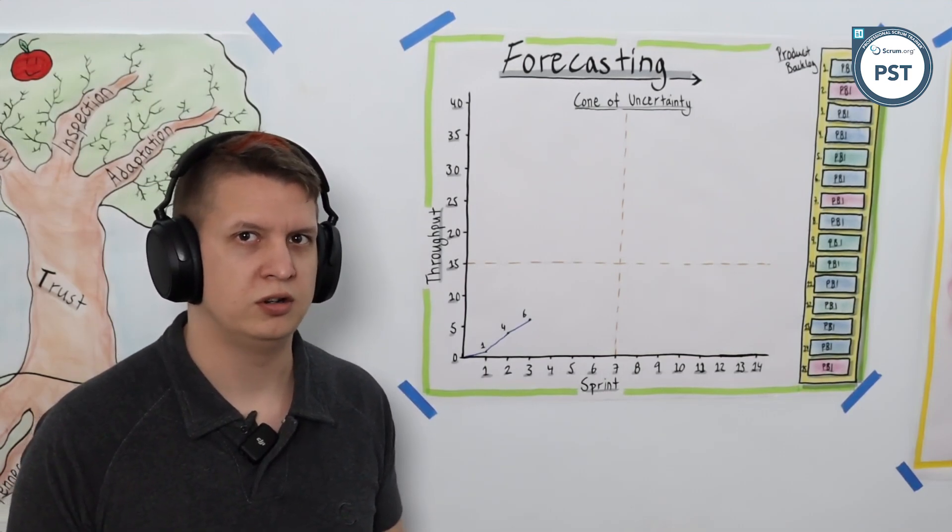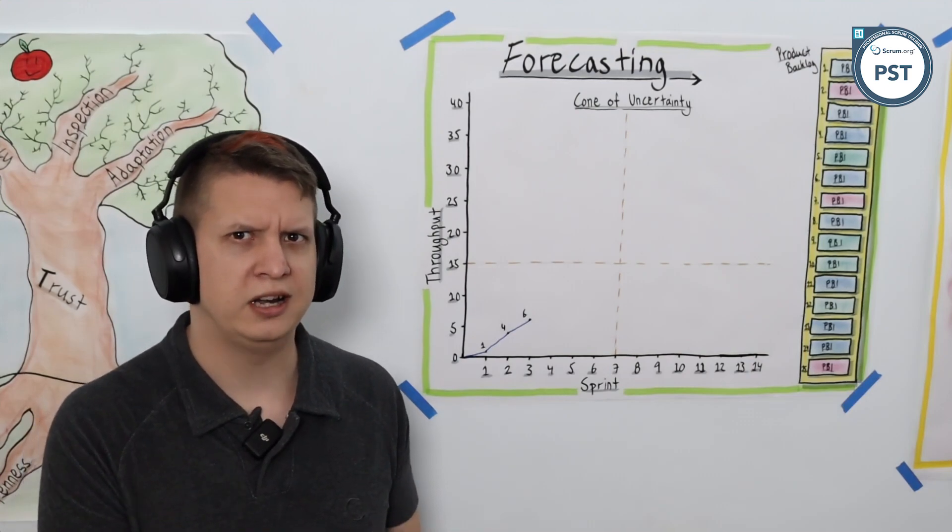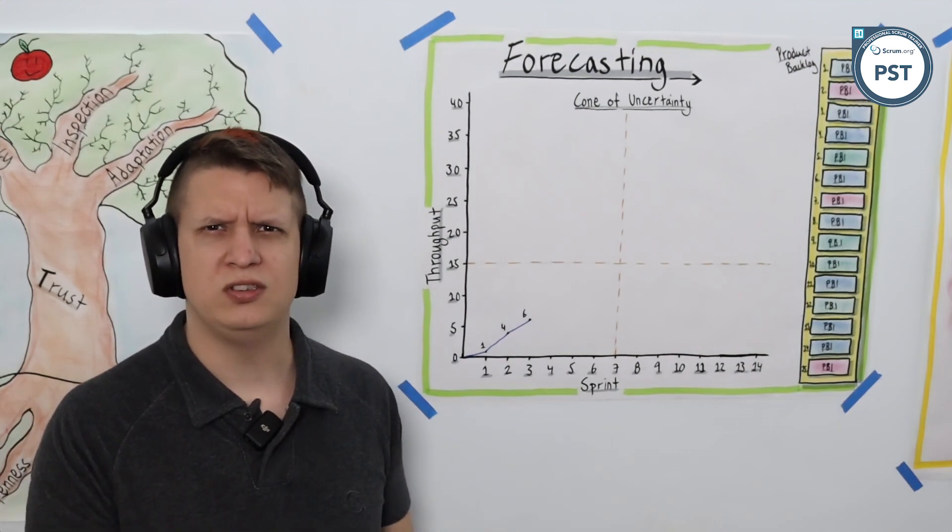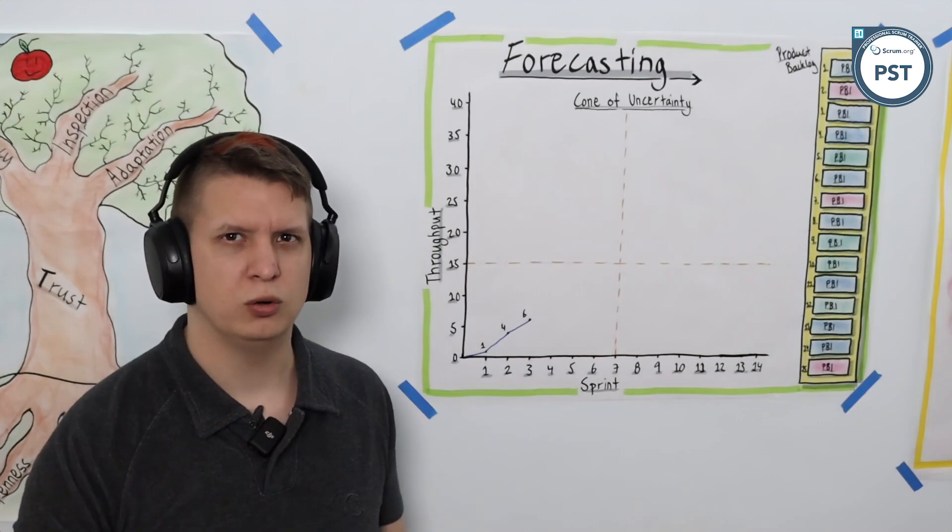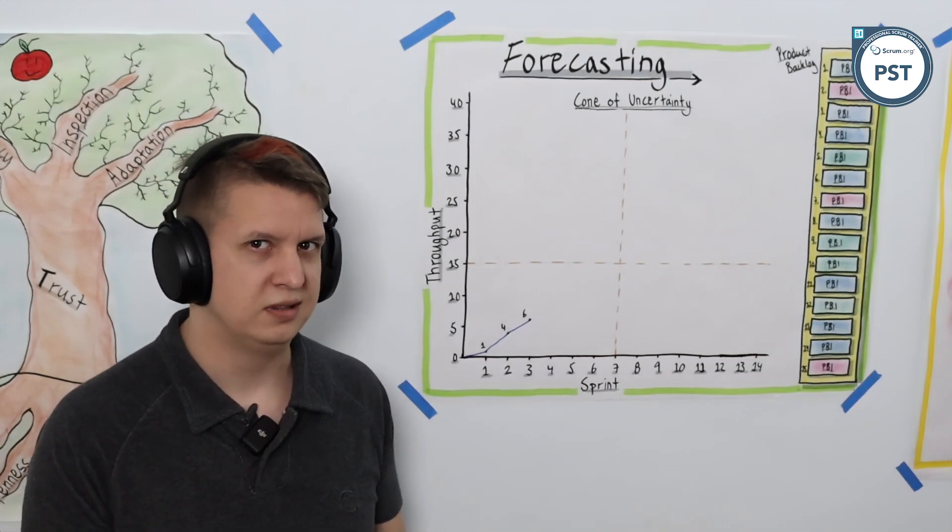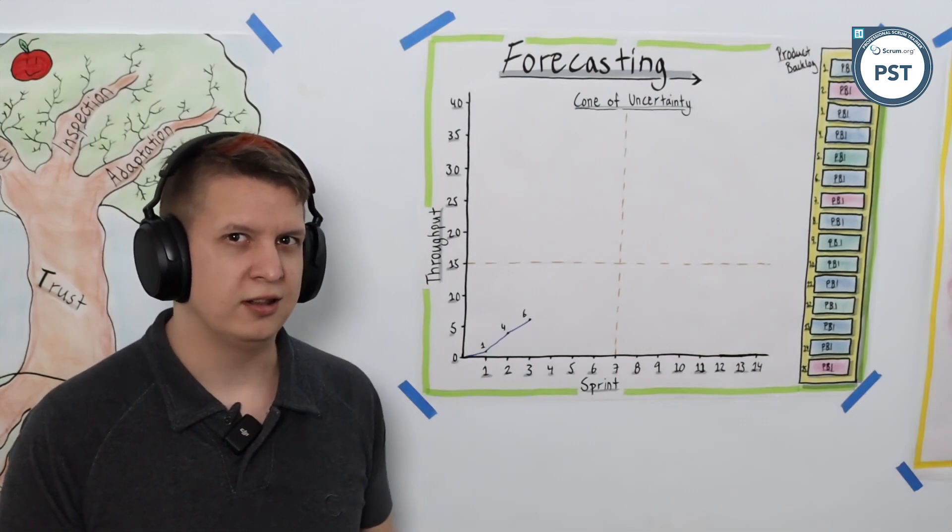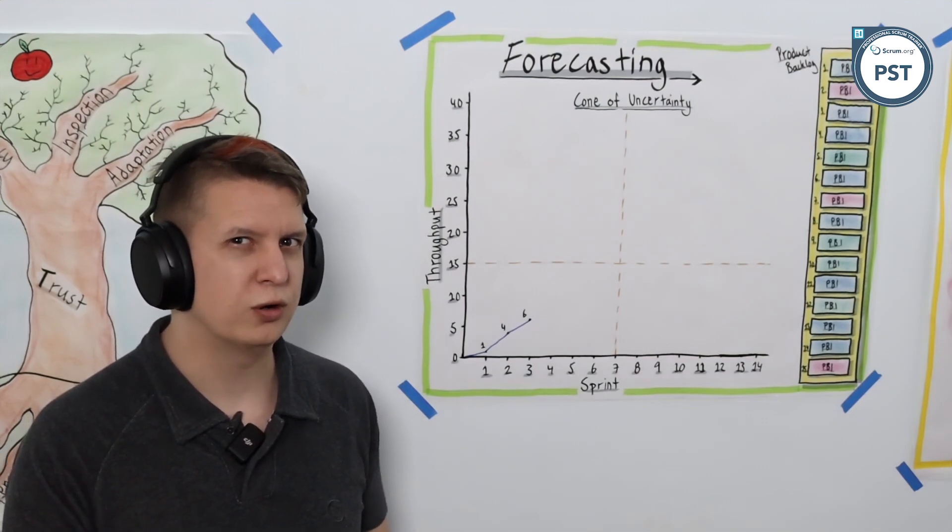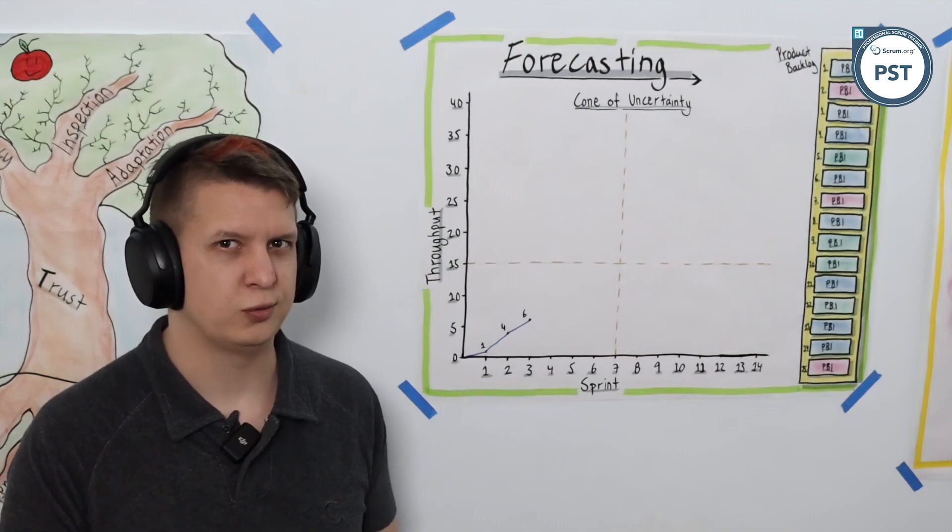We'll use something called the cone of uncertainty, which if you live in any tropical area or many parts of the US, you will have seen those hurricane and tropical weather forecasting maps. They are using the same concept. Even when life is on the line, this stuff works, so it probably will work for our software and hardware as well.